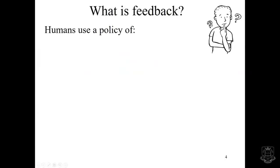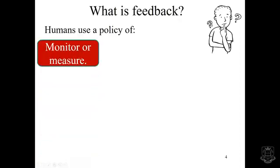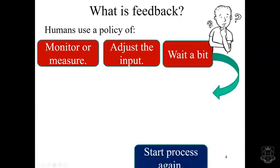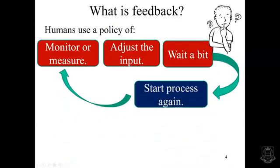Here we're going to introduce how we do it. First of all, we monitor or measure where is something at the moment. Is it where we want it to be? If not, let's change the input a bit. Having changed the input, let's wait a bit and see what happens. What's the effect? And then we start the process again. Having waited a bit, we monitor or measure again and say, is it where I want it to be now? Do I need to change the input a bit more? Let's wait a bit more and you'll see we've got a loop. We go round and round and round.